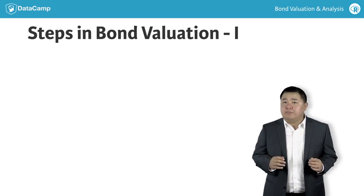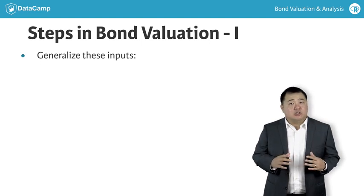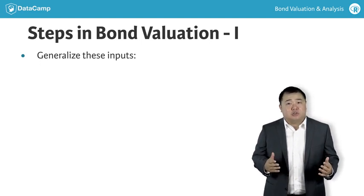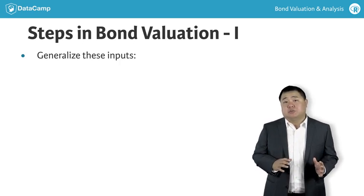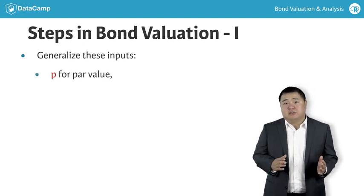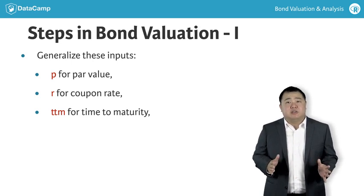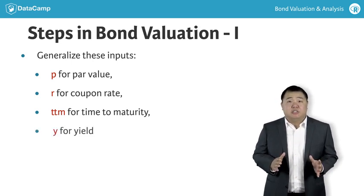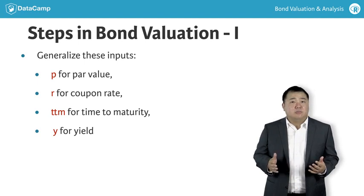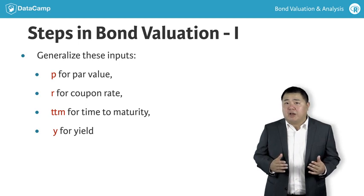We still keep the step-by-step approach from before, but this time we have to generalize the inputs so the function can value bonds with different coupons and maturities. The first thing we do is use variable names instead of actual values. So we use P for par value, R for the coupon rate, TTM for time to maturity, and Y for yield. These variables P, R, TTM, and Y are the required inputs by the bond valuation function.